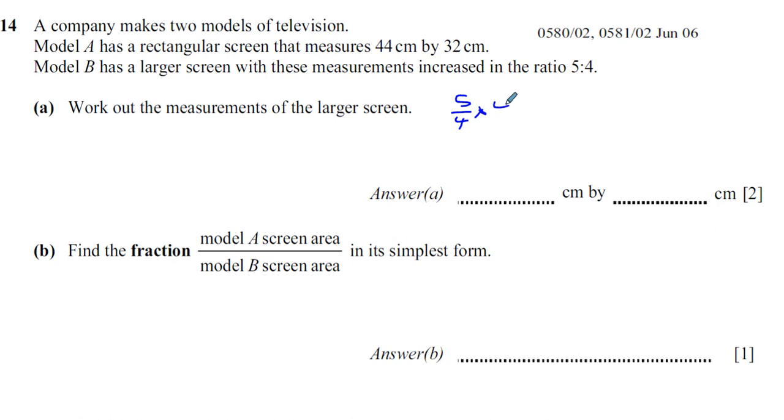So 5 over 4 times 44, and 5 over 4 times 32. The numbers work out nicely. 4 goes into 44, 11 times. 5 times 11 is 55.